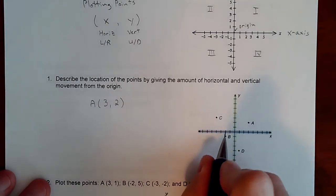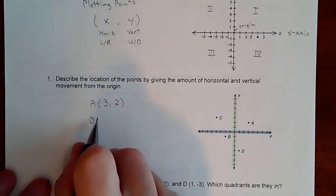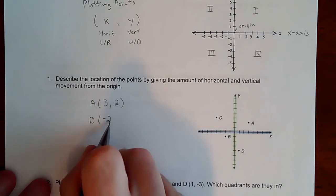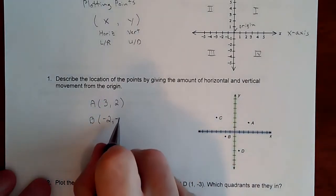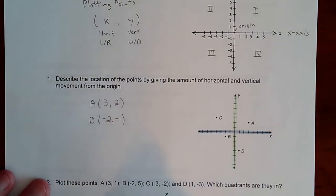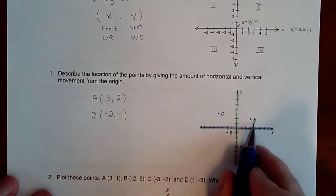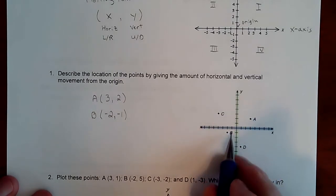Point B is two to the left, and if we're going left, we're treating that as a negative, and down one, also being treated as a negative. So point B is (-2, -1). Point A is in quadrant one, point B is in quadrant three.